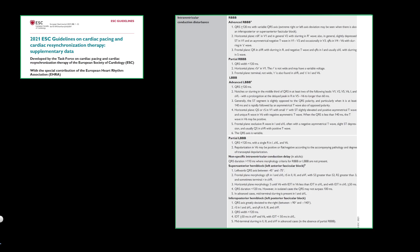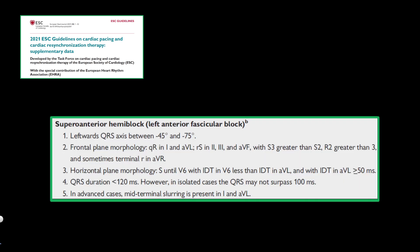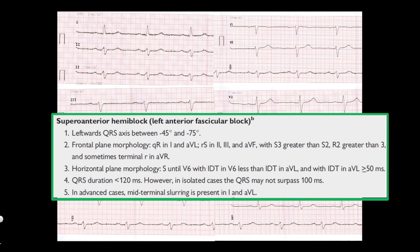Let's check the ECG criteria of left anterior fascicular block according to supplementary data for the European Cardiology Society guideline on cardiac pacing and resynchronization therapy. The criteria are: leftward QRS axis between minus 45 and minus 65 degrees, QRS morphology changes in both the frontal and horizontal planes, and QRS duration less than 120 ms. Let's find all of these criteria one by one in a real ECG example, starting from the leftward QRS axis deviation.